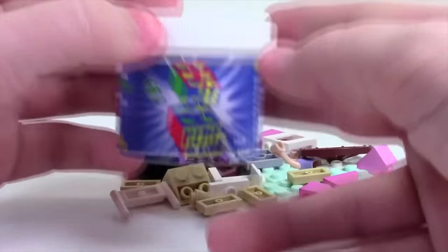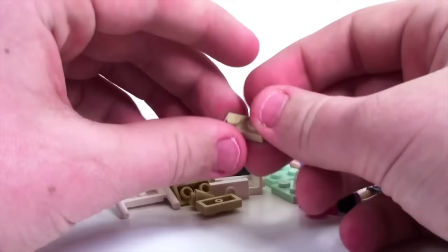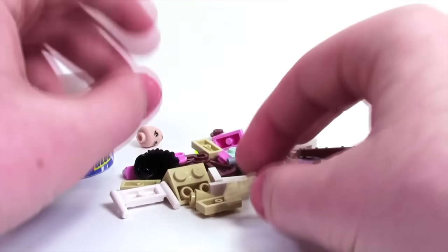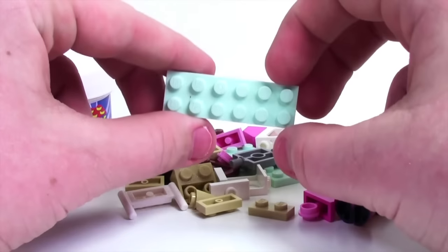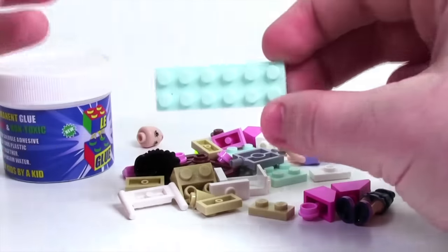Leg glue is definitely a great product considering it works very well and took all the glue residue off these Lego pieces just by putting them in water, and you completely saw me do that. I didn't do anything else special, and it was just plain water.